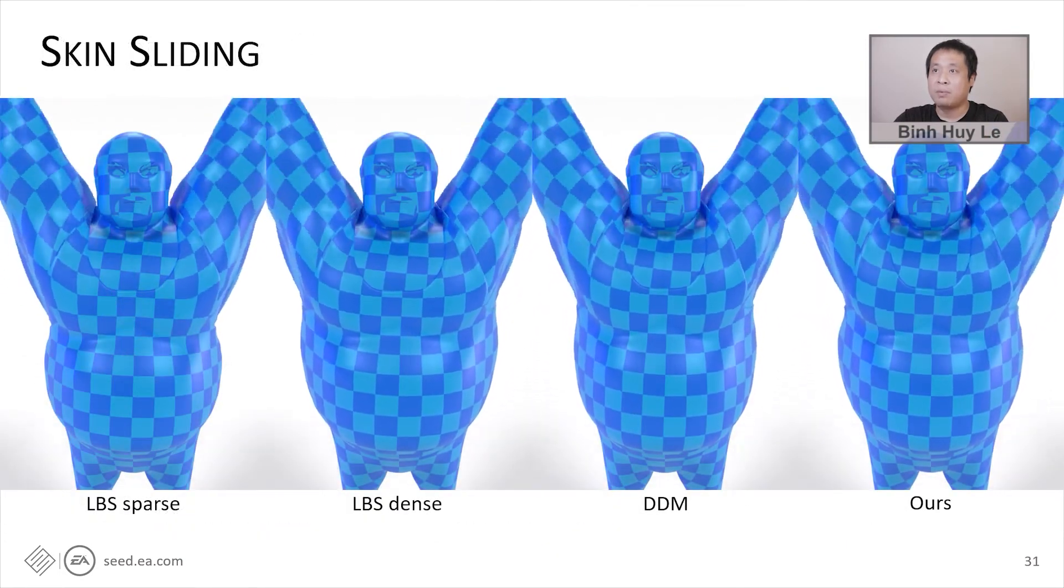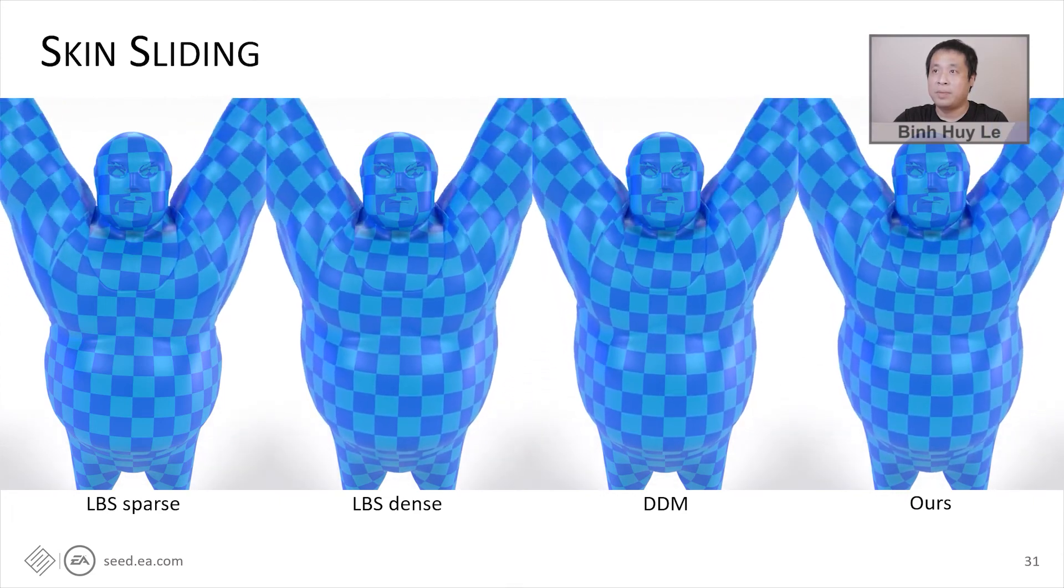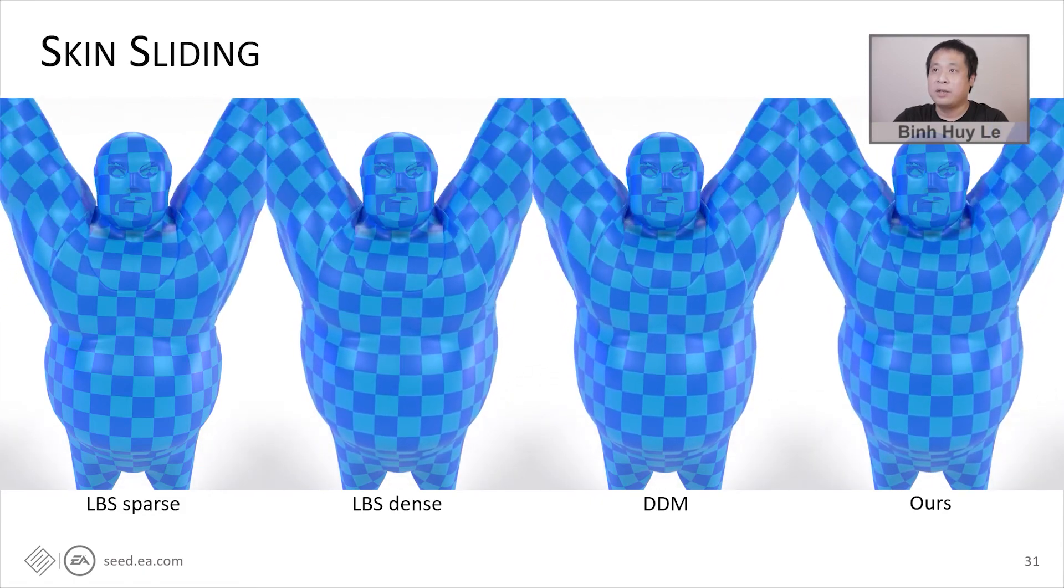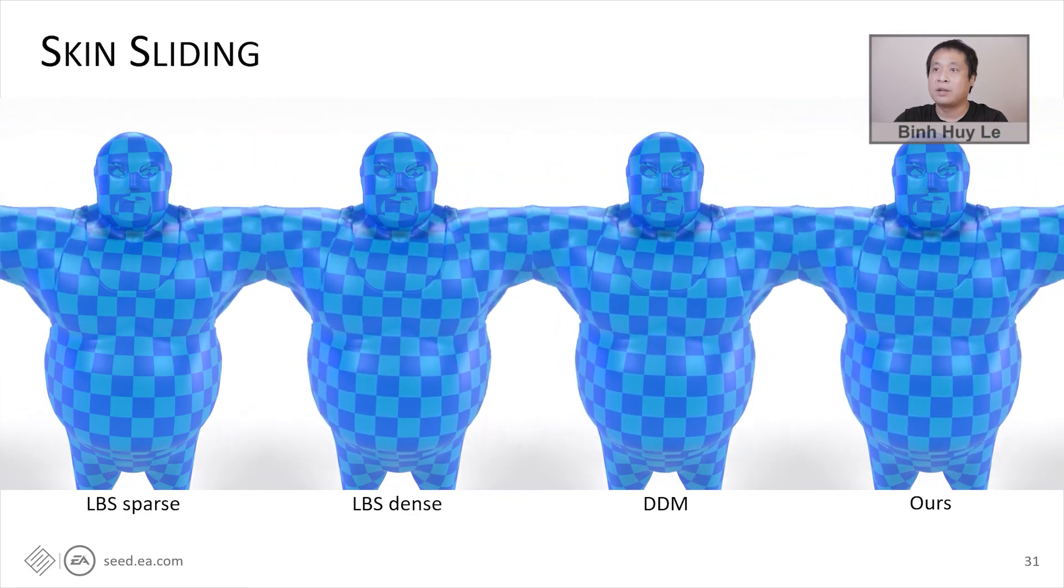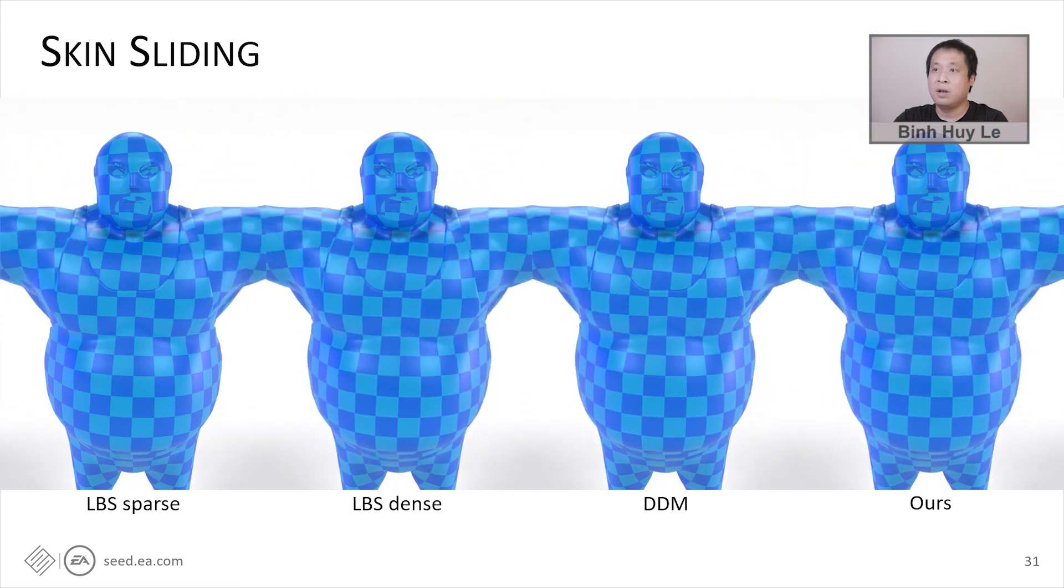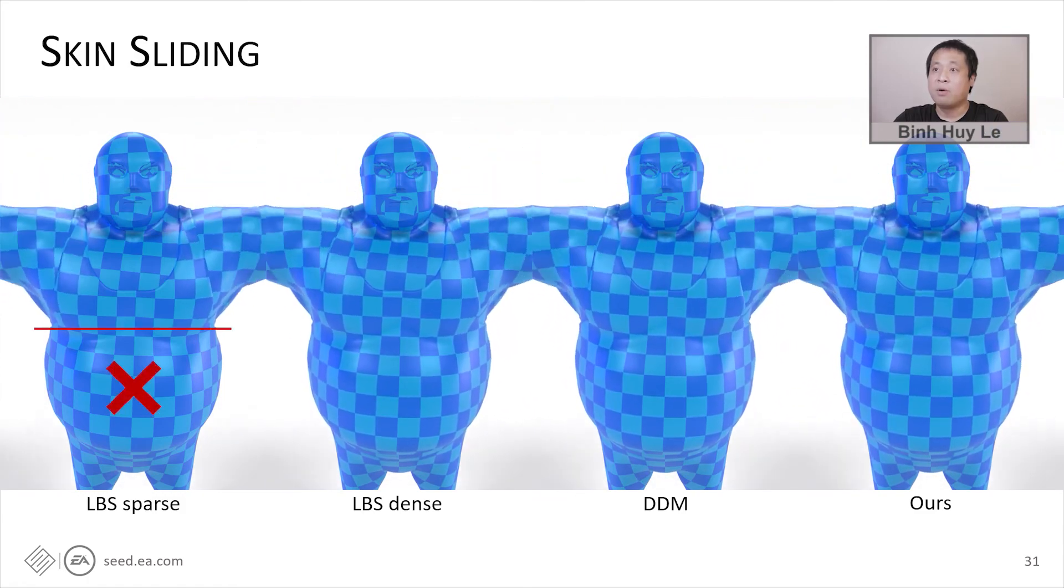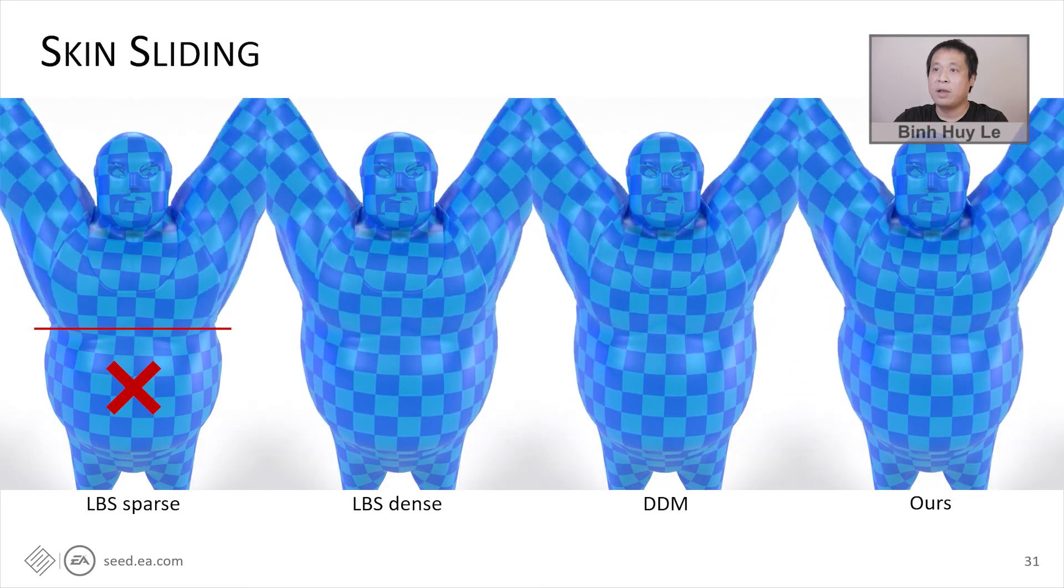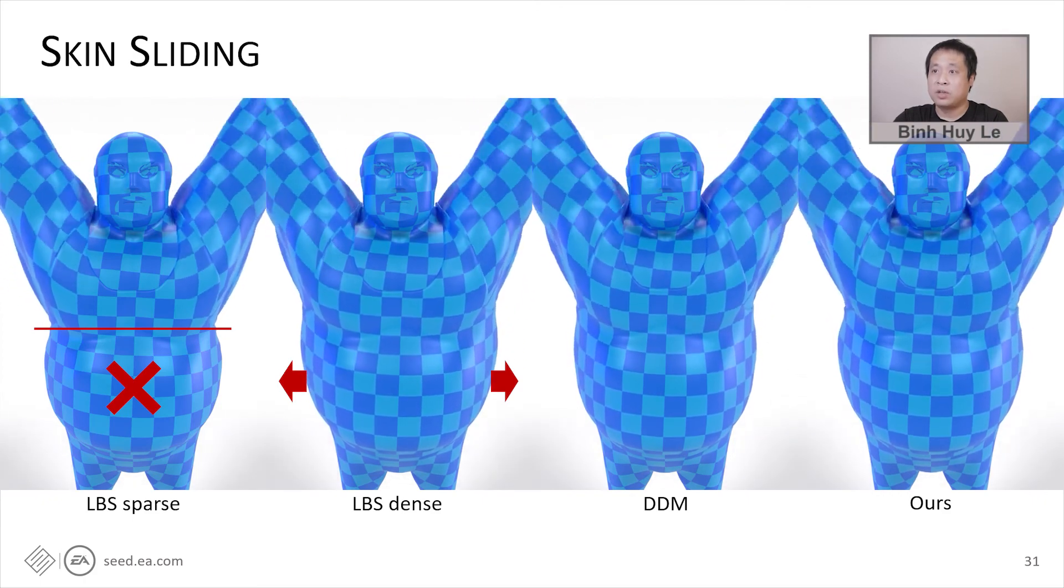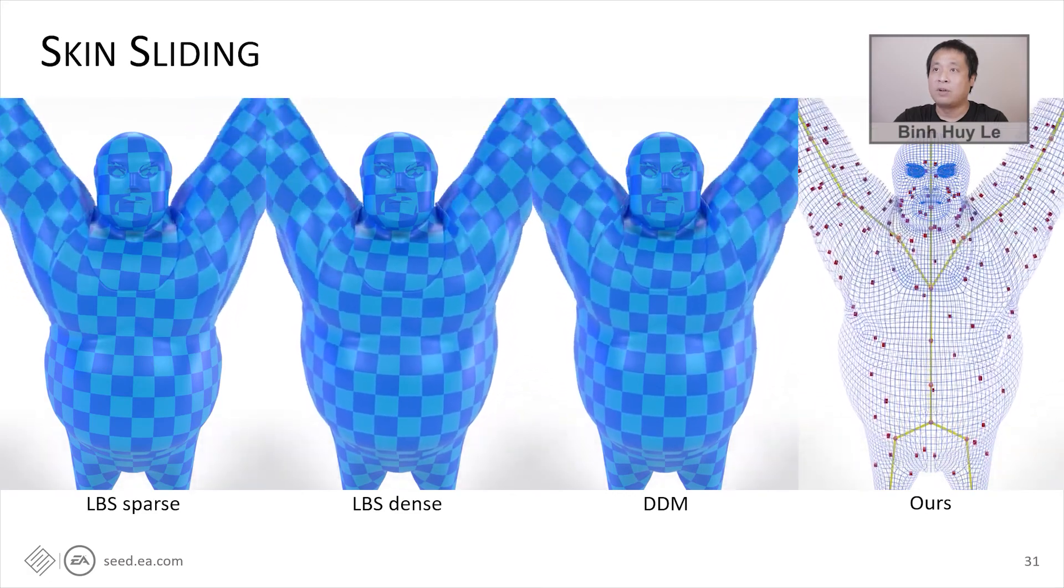Because our two-layer model is an approximation for DDM skinning, it preserves the distinctive features of DDM. In this example, both DDM and our model generated nice skin sliding for the chest of the character. This effect is not possible with previous techniques such as LBS, no matter how you set up the skinning weights. With sparse weights, there is no globular elastic effect on the belly. And with denser weights, the belly expands to two sides, which is due to the bulging artifact of LBS.